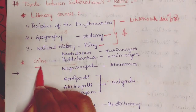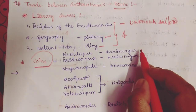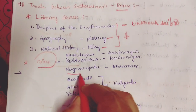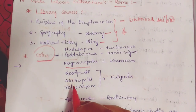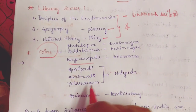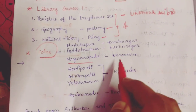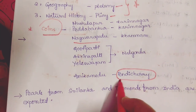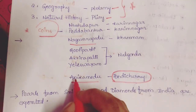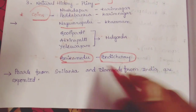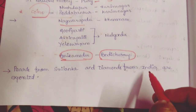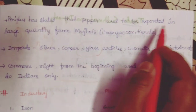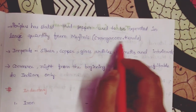Roman coins have been found in Telangana — at Pedabankuru and Nustulapuru in Karimnagar. Pondicherry at Arikamedu is the main trading center for Romans. It is also known from sources that pearls from Sri Lanka and diamonds from India were exported. The Periplus of the Erythraean Sea states that pepper used to be exported in large quantities from Mujris, which is present in Kerala.